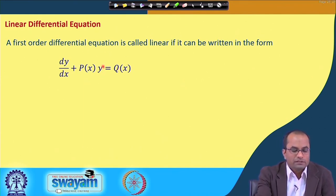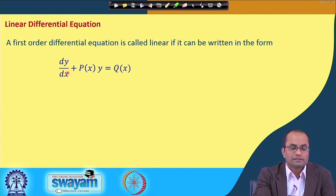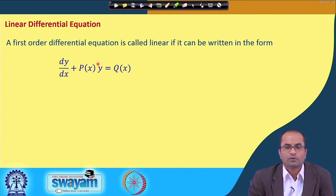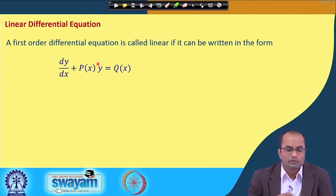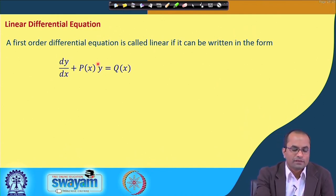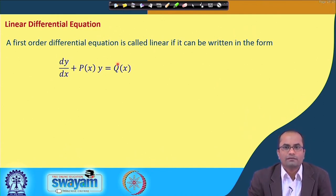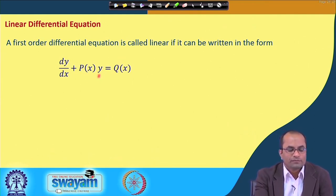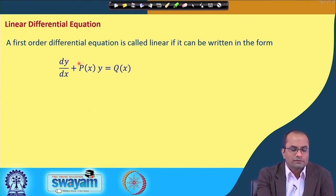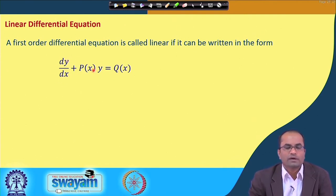We call this equation linear because it is linear in y: dy/dx appears as a single term, and y appears just alone — there is no product of y with itself or with its derivative. The functions P and Q may have powers of x such as x² or any other function, but y must appear only as dy/dx and y alone.